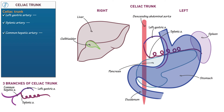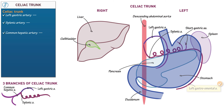As it reaches the spleen, show that the splenic artery gives rise to short gastric arteries, which supply the stomach — specifically the fundus of the stomach. Then show that the splenic artery gives rise to the left gastroomental artery, which travels along the inferior border of the stomach, also known as the greater curvature.